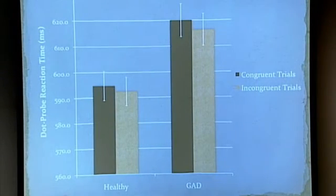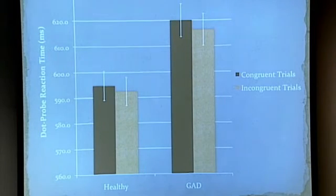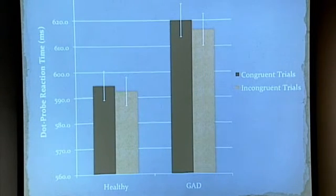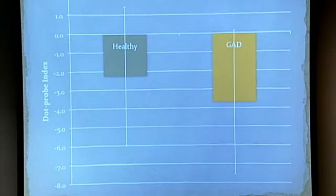For the dot probe task, there was no difference within each group between congruent and incongruent reaction time trials. Although it doesn't look this way on the graph, the difference between groups was also not statistically significant. The scale on the axis is about 600 milliseconds and the difference between the groups is about 20 milliseconds, which is why this difference is not statistically significant. The dot probe index — the difference between congruent and incongruent reaction times — was also not statistically different between the two groups.